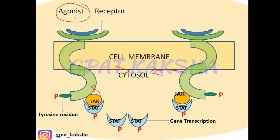JAK, on binding with this receptor, gets activated and phosphorylates the tyrosine residue present on the receptor. Upon phosphorylation of tyrosine residues present on the receptor, these in turn phosphorylate the free-moving STAT proteins present in the cytoplasm.